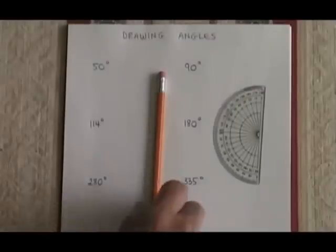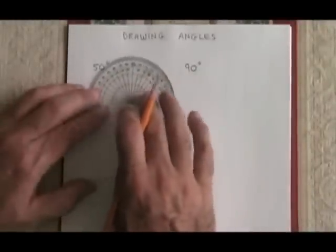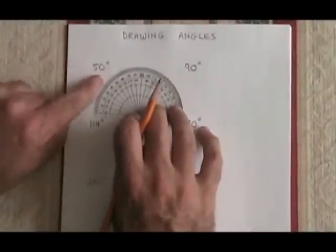Let's practice drawing angles. We have to be familiar with our protractor to do this. The first angle I'm asked to draw is 50 degrees.